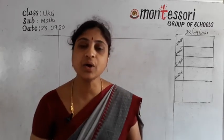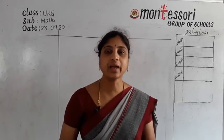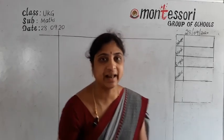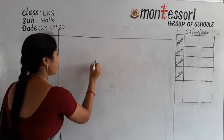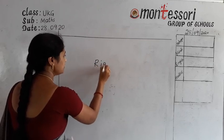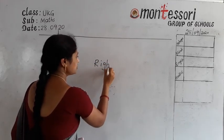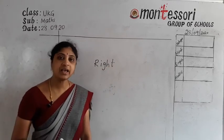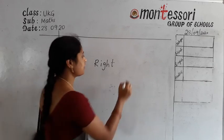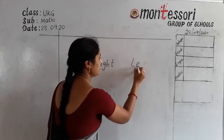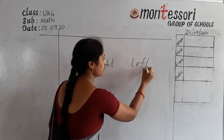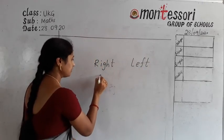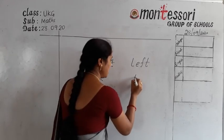Today's topic is also right and left. Say the spelling of right: R-I-G-H-T. Right. Left: L-E-F-T. Left. The shortcut for right is R, and the shortcut for left is L.